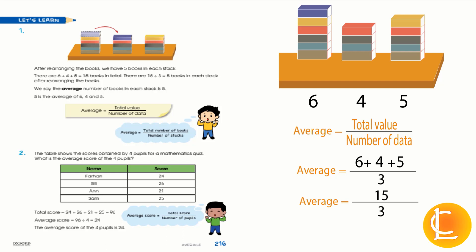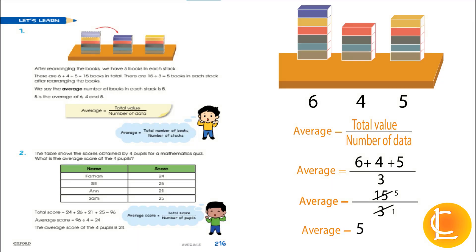Then, dividing fifteen by three, we get five. So, the average is five. There should be five books in each stack.